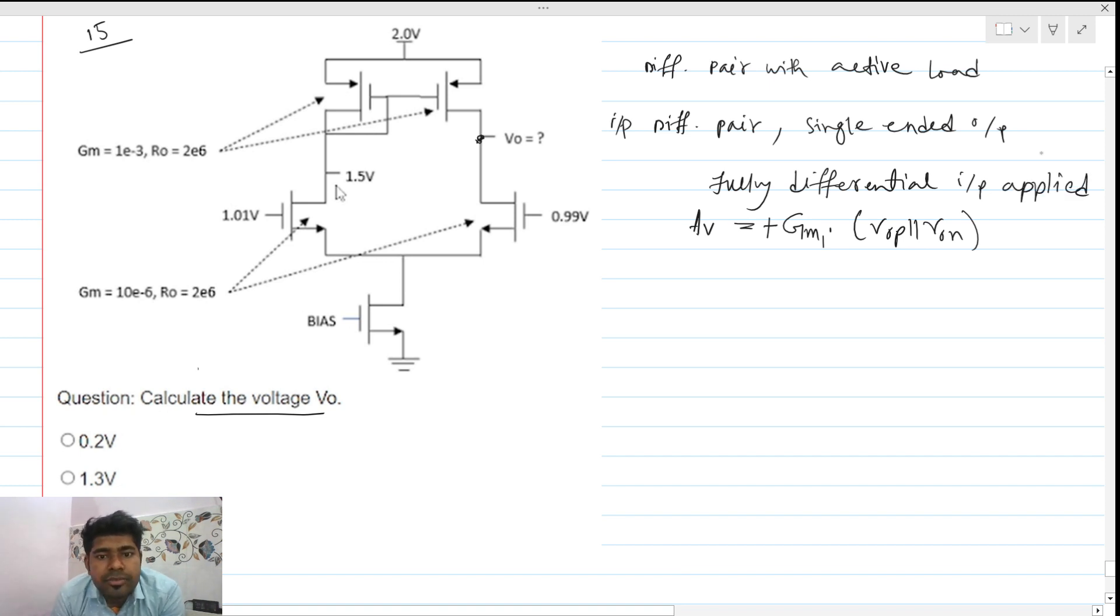What is our differential input? This is nothing but v1 minus v2. Here v1 is 1.01 volts and v2 is 0.99 volts.